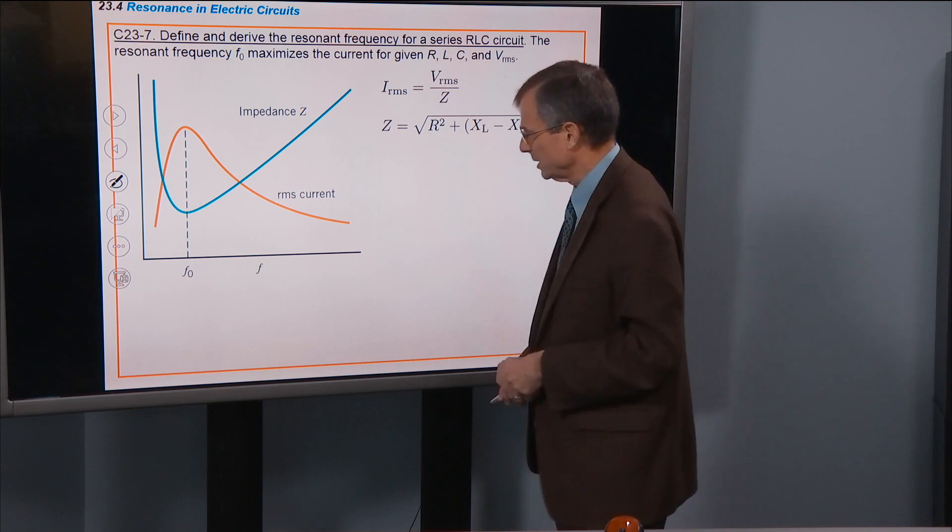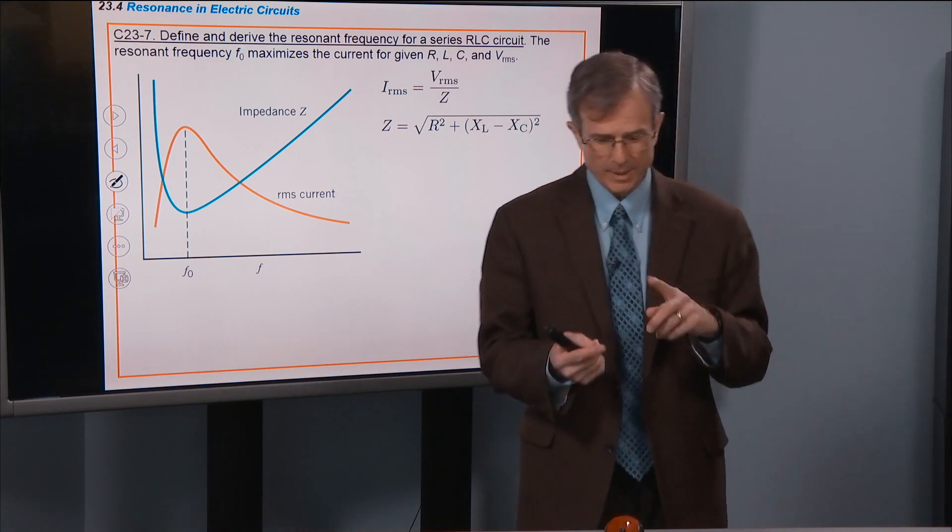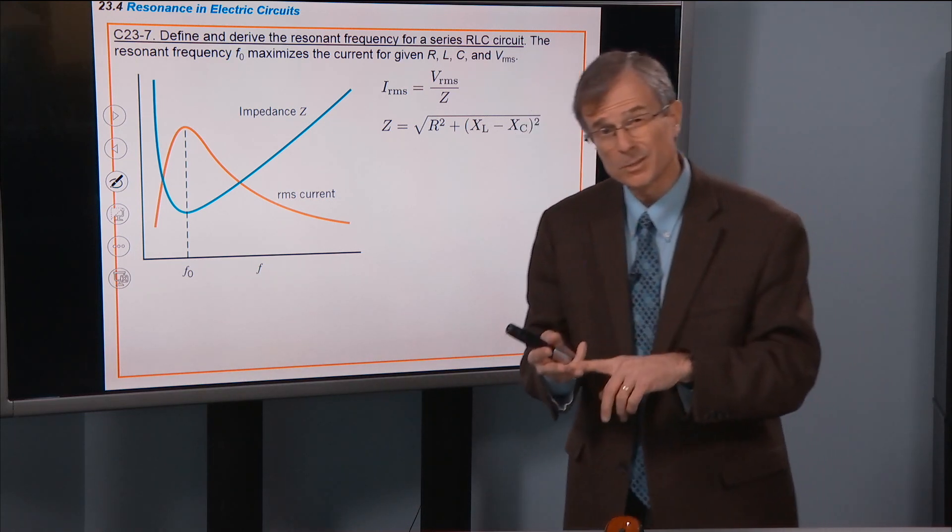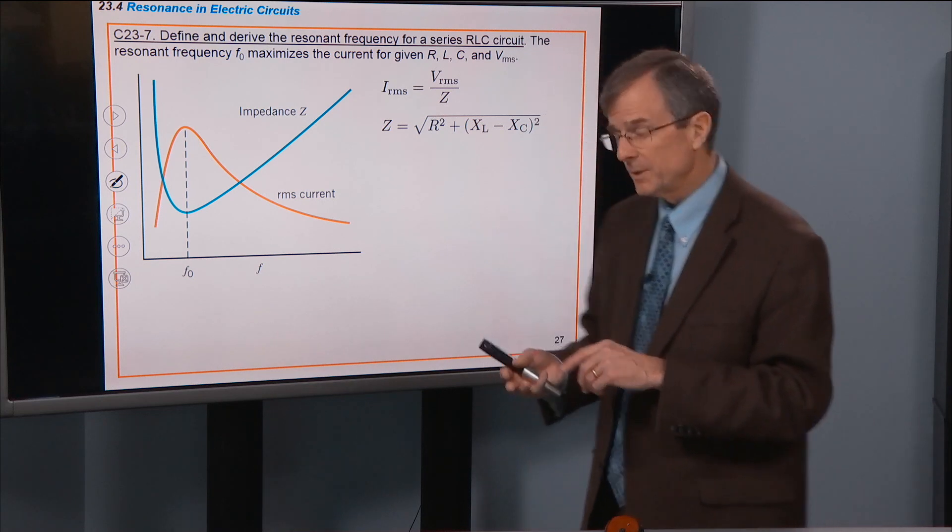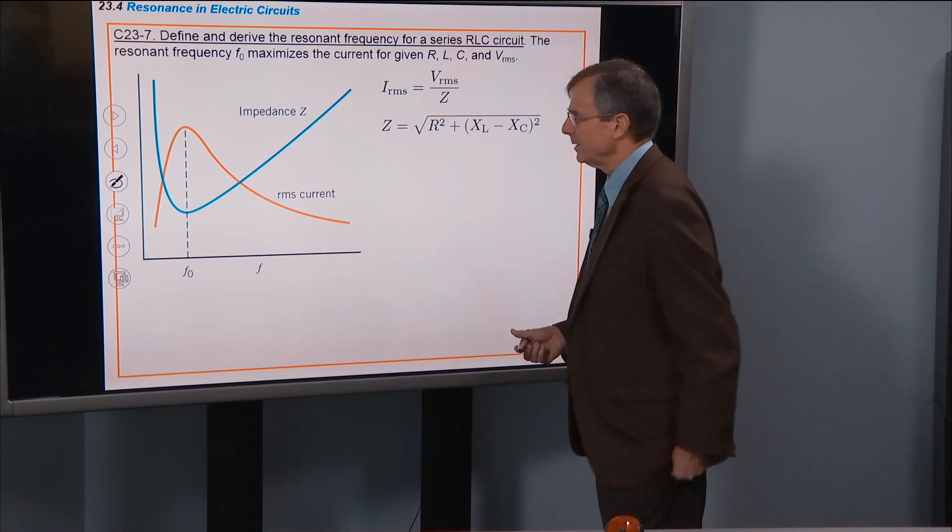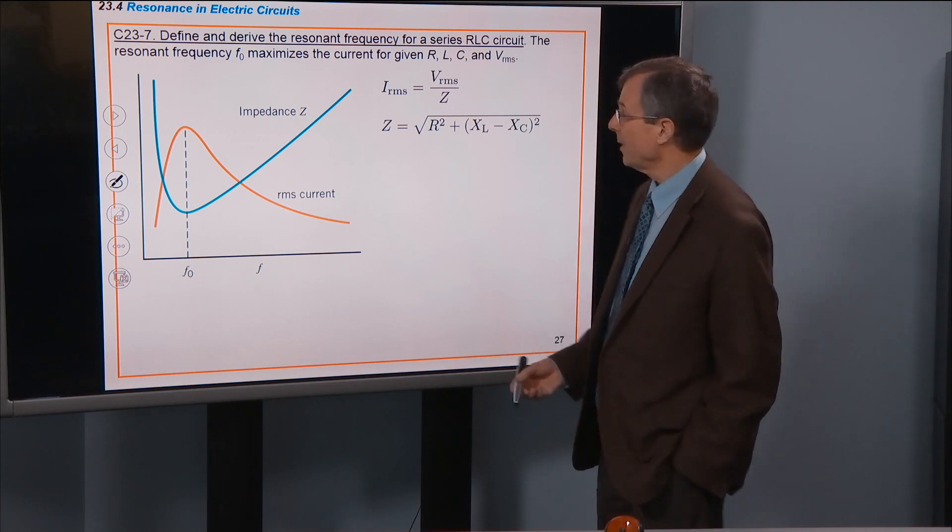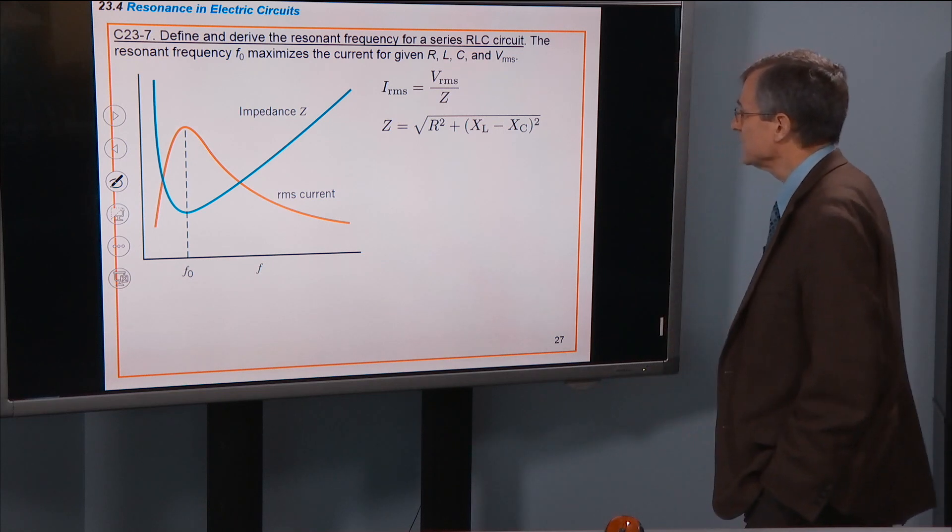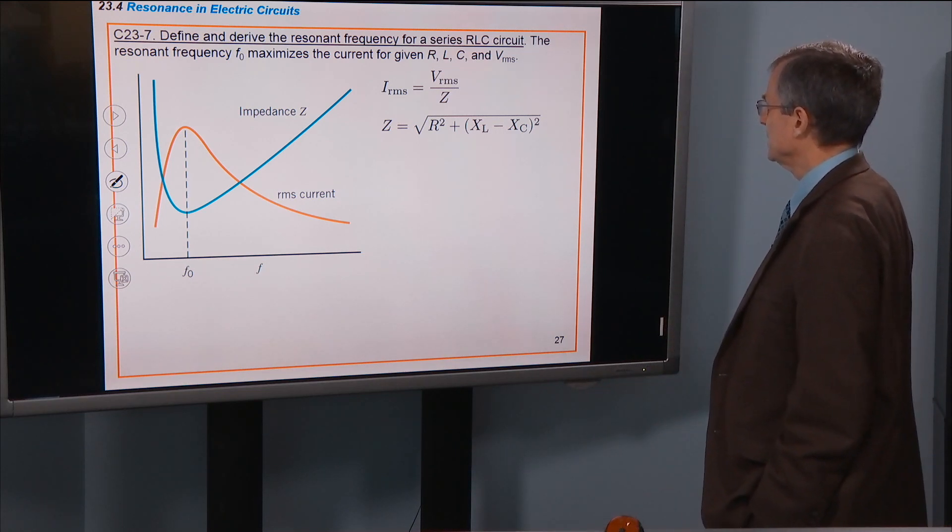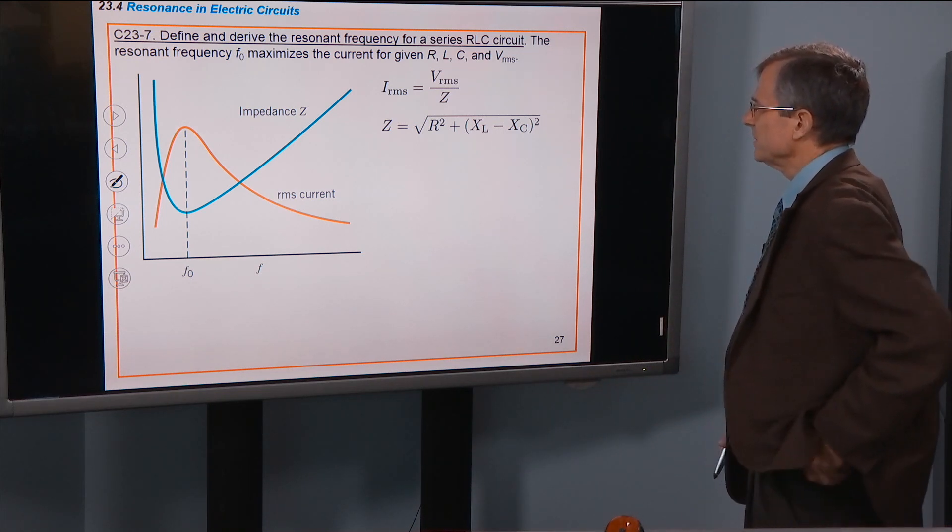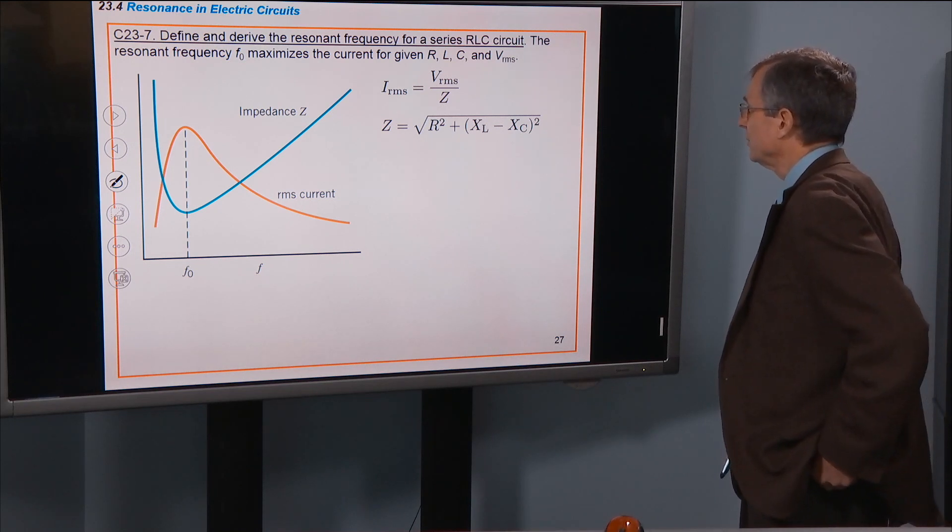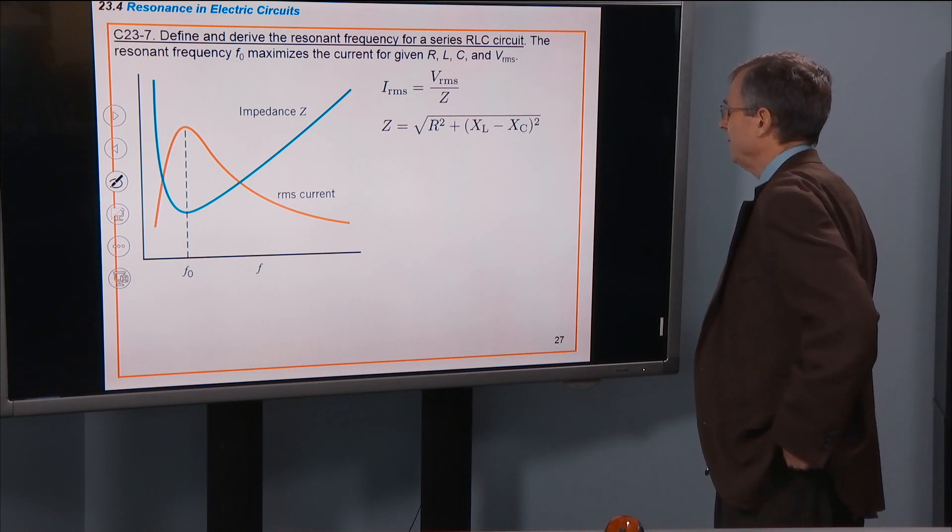But most circuits have not only an inductor and a capacitor, but also a resistor. And when that resistor is thrown in there, then you get the following interesting behavior. And we're going to derive it, define and derive the resonant frequency for a series RLC circuit. The resonant frequency F0 maximizes the current for given R, L, C, and V RMS.